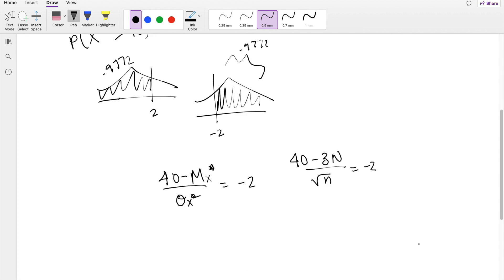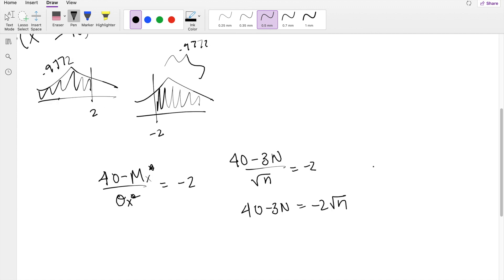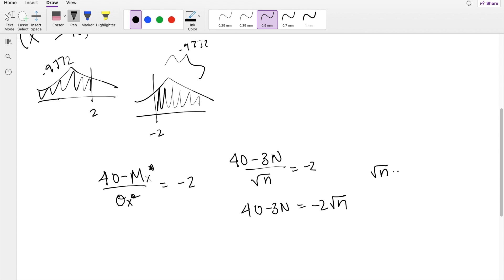So this just becomes a pretty simple algebraic problem. 40 minus 3n is equal to negative 2 root n. I'm going to let root n be equal to m.